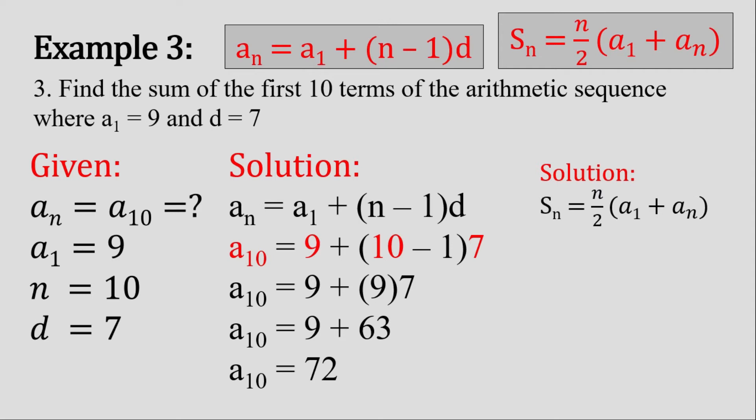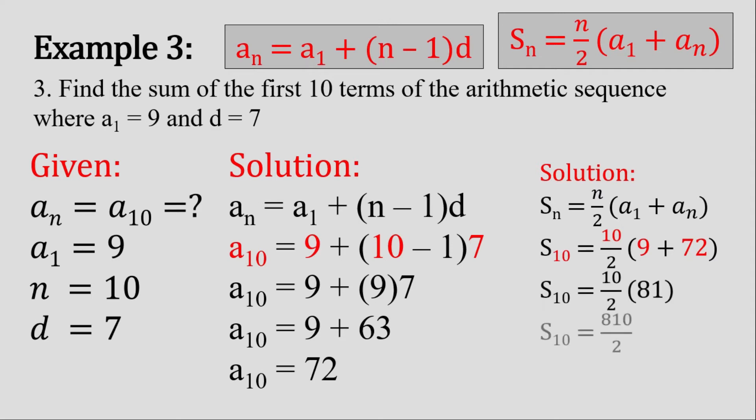Now let's write the arithmetic series formula, substitute all the values we have, and simplify. We get the answer of 405 for this example. Therefore, the sum of the first 10 terms of an arithmetic sequence where a sub 1 is 9 and common difference is 7 is 405.